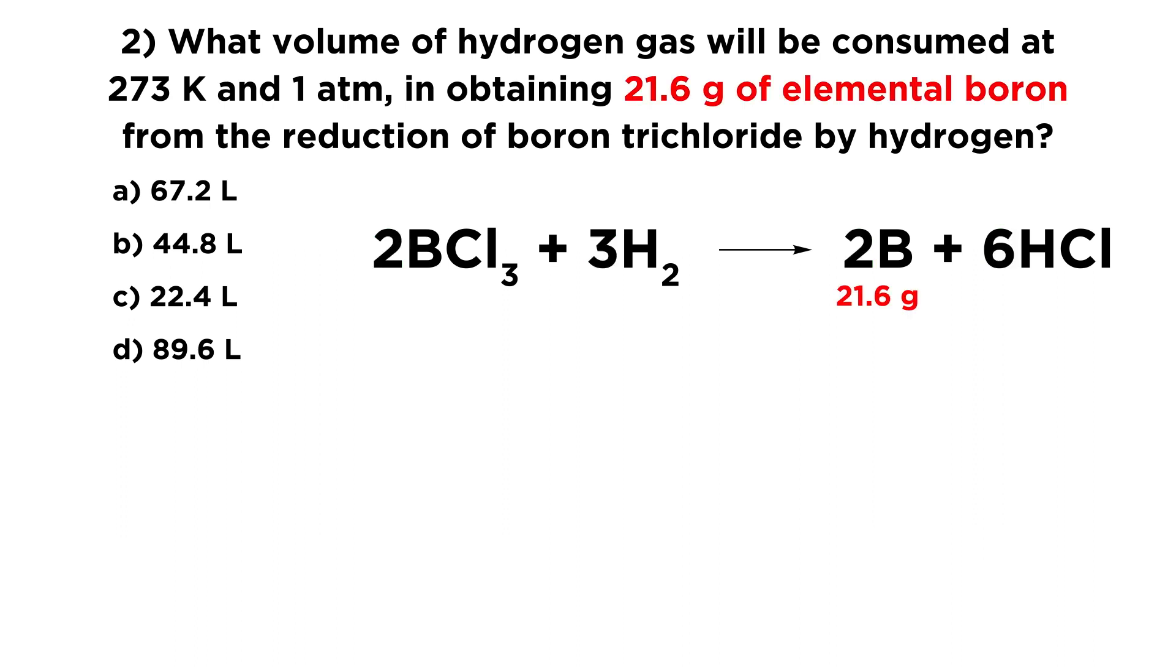So now that we have this, we're ready to do stoichiometric calculations. Let's take the information we have. We have 21.6 grams of elemental boron. We're going to want to convert that into moles. Remember that moles, that's how we do stoichiometric calculations.